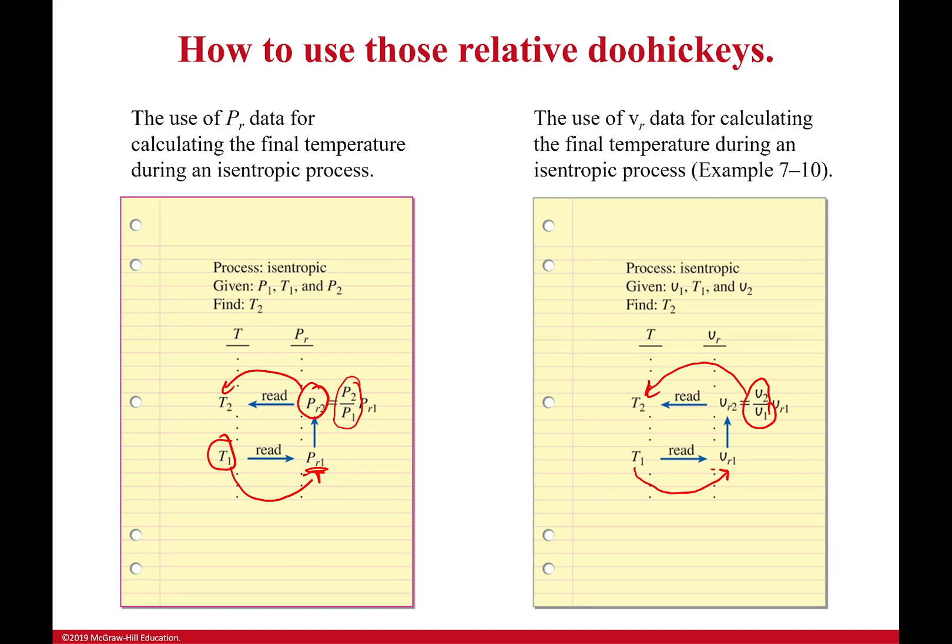It's a really simple process when you're doing it. Just know that if you have pressures, use relative pressure. If you have volumes, use relative volumes. And it's a way for you to find your final temperature. That's the big thing here. If you know your initial temperature, you can find your final temperature using that ratio of pressures or using that ratio of specific volumes.